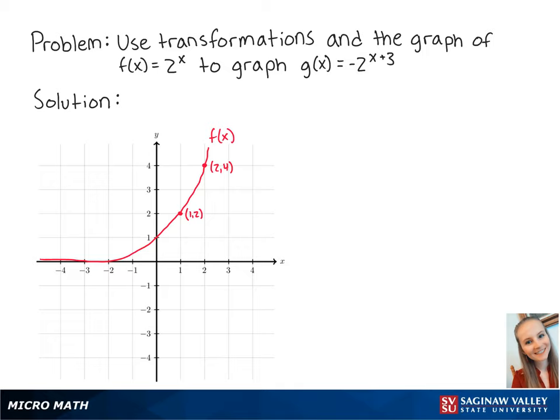For this problem, we want to use transformations and the graph of f of x equals 2 to the x to graph g of x equals negative 2 to the x plus 3.